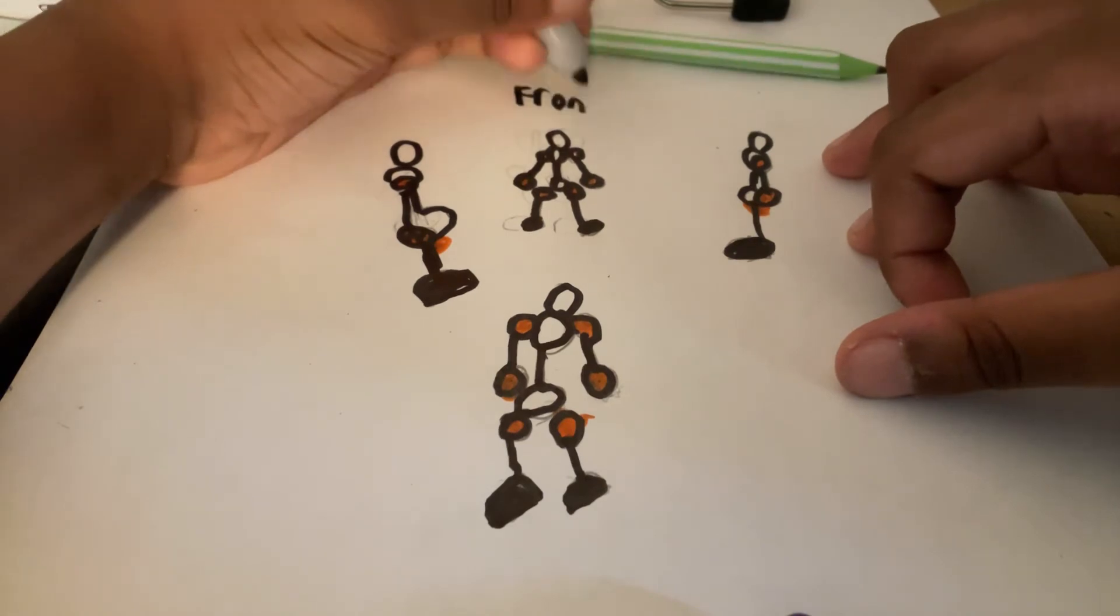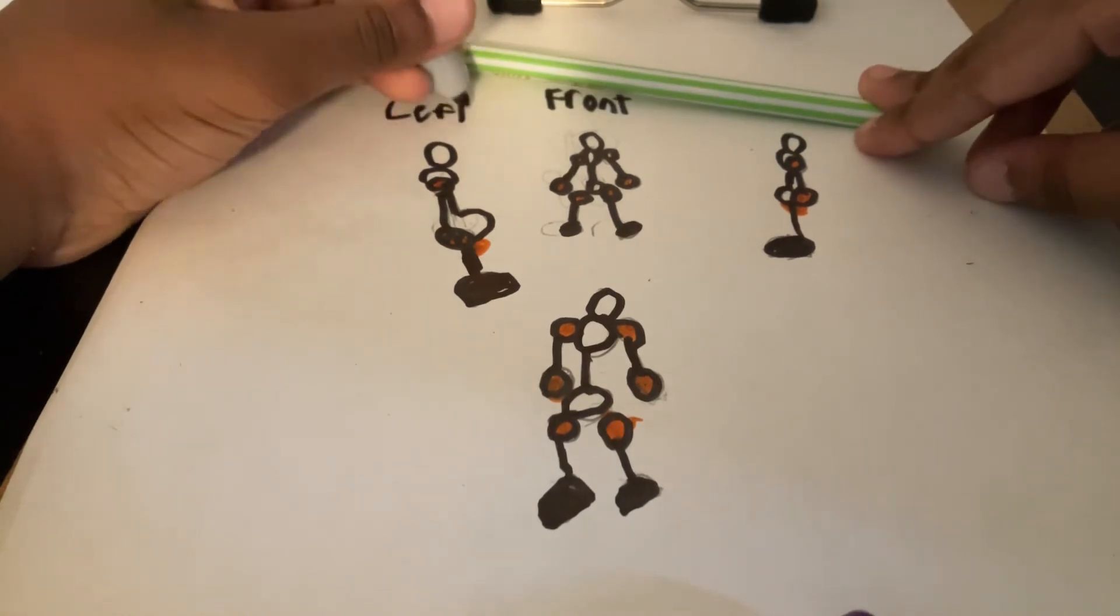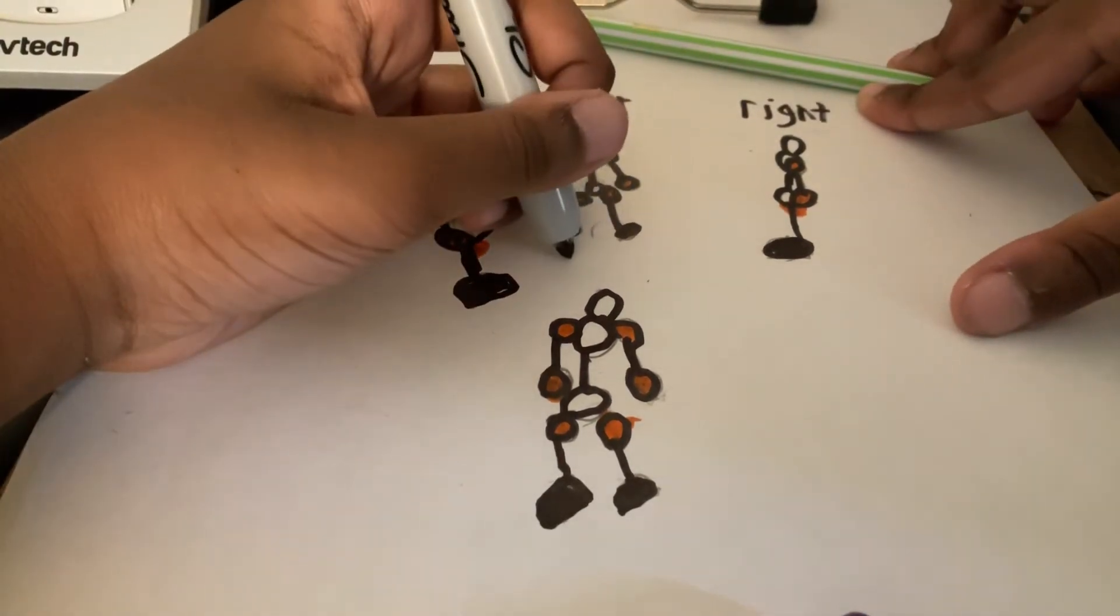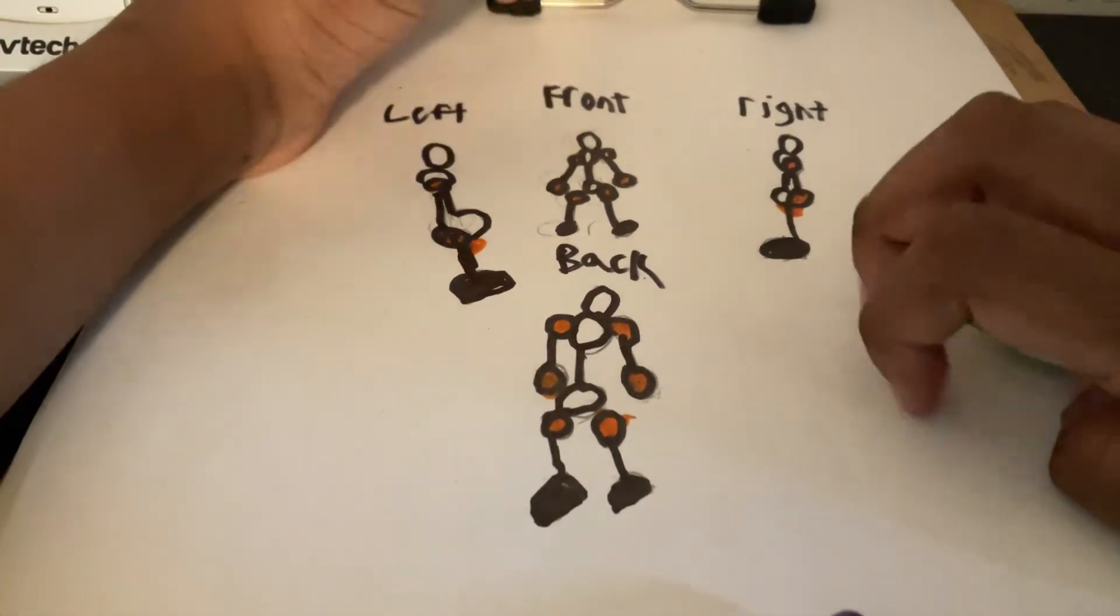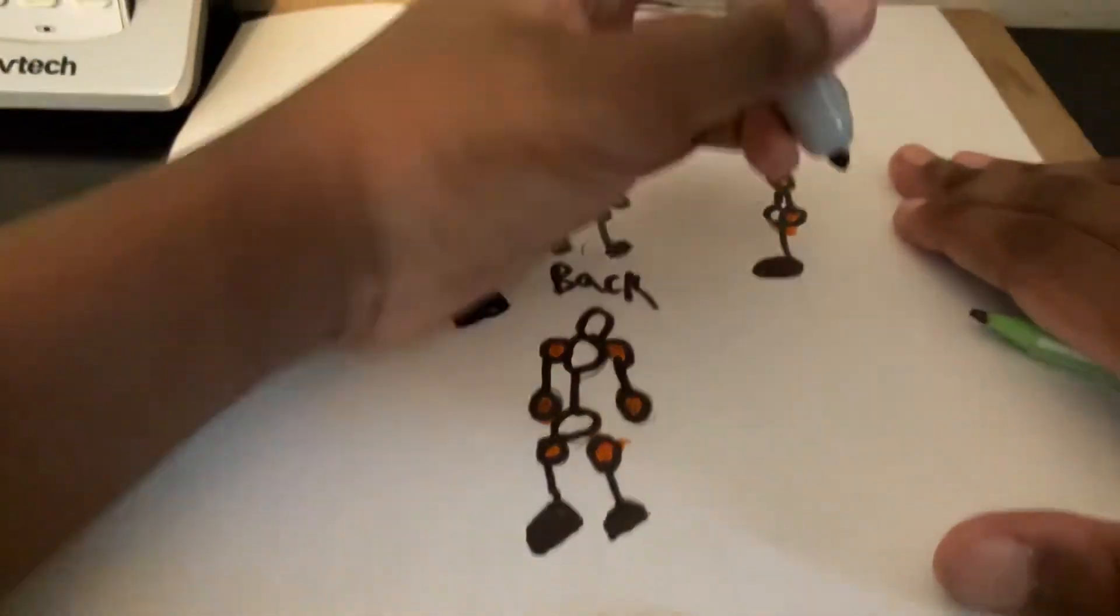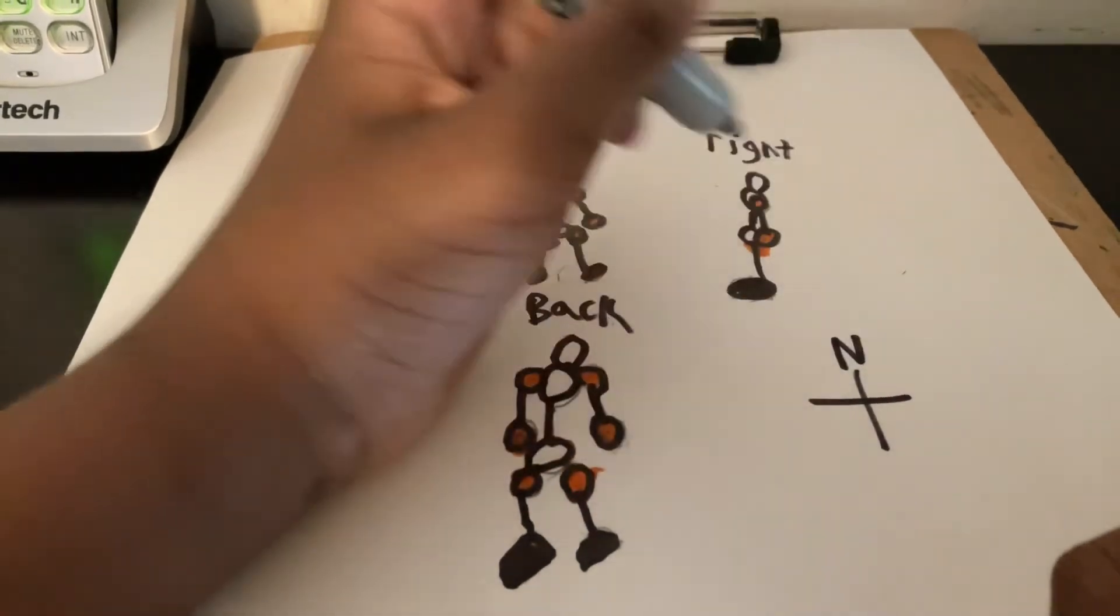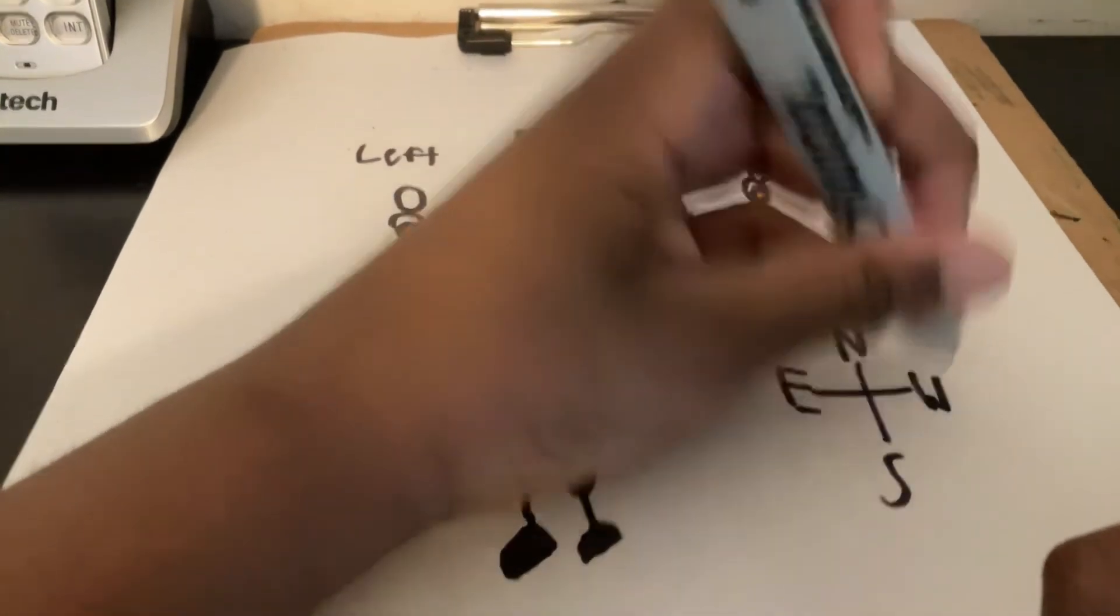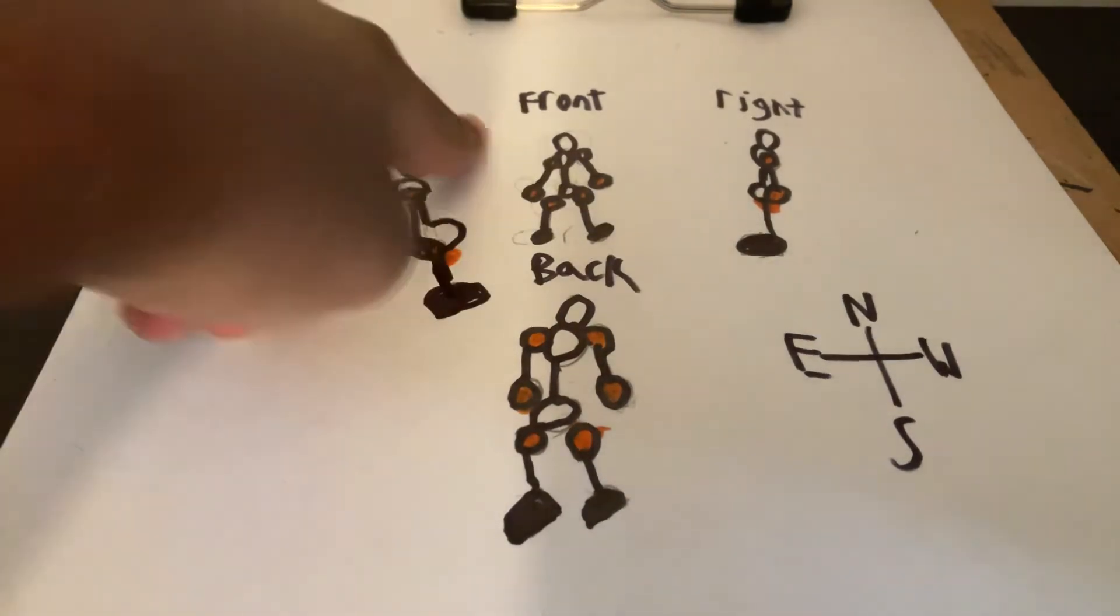Right, that's the left. Right back, alright. And it's also known as North, South, East, and West. West is right, East is left I believe. Back is South, Front is North.